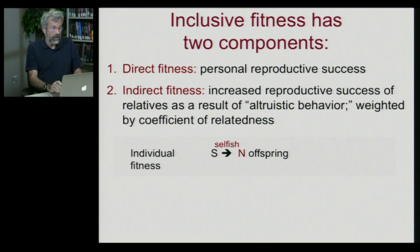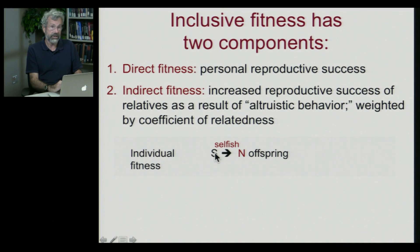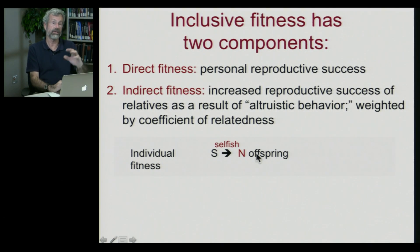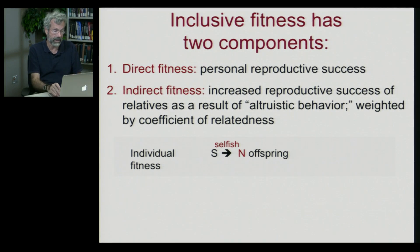If we look at individual fitness — the traditional way of thinking about it — we have a very selfish organism. All it does is go out to make sure that it has more and more offspring of its own. The only way it gets its genes into the next generation is through its own offspring. That's what we've been looking at up until today.